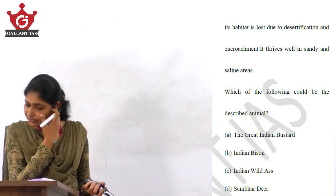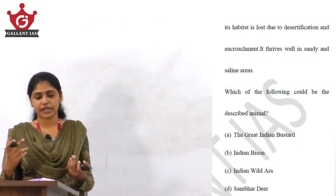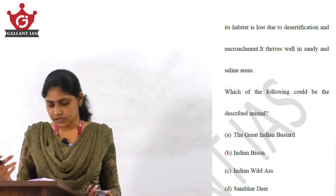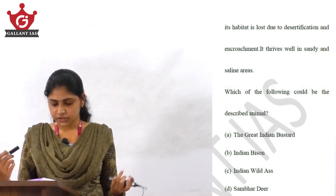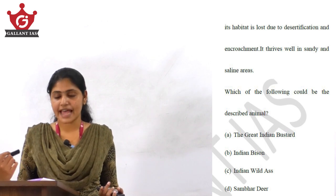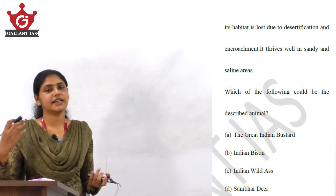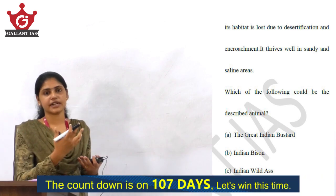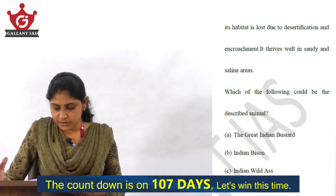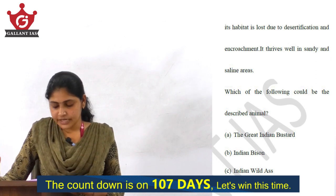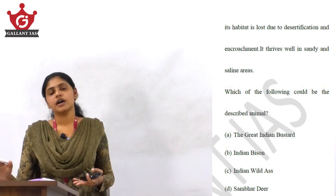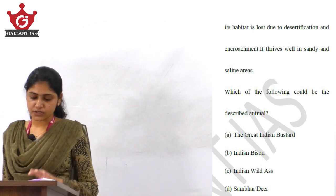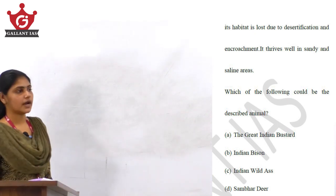The answer is option C, Indian Wild Ass. Even if you are not aware of this fact, you can make certain guesses. The question says its habitat is lost due to desertification and encroachment, and it thrives in sandy and saline areas. This animal is distributed mostly in the Rann of Kutch region in Gujarat.